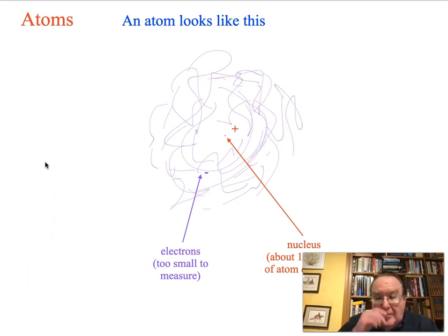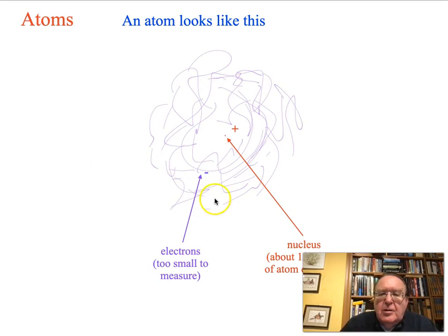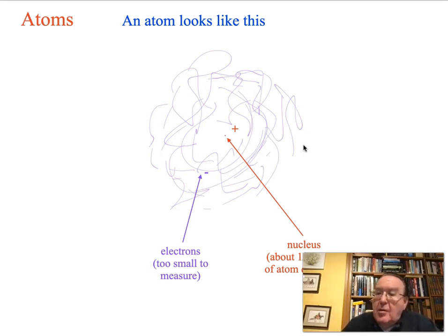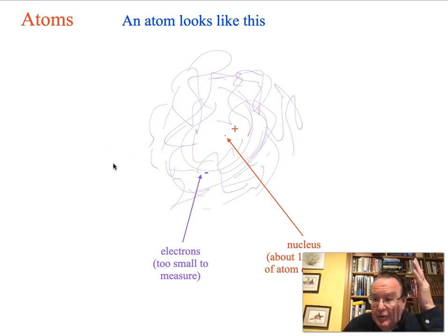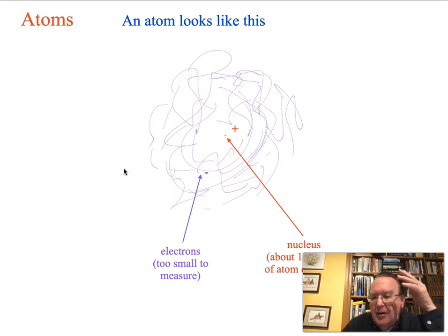We're going to be talking a lot about atoms. There are lots of images of atoms around, but most of them are actually not very physical. An atom really looks like this picture. There's a nucleus at the center, which is smaller than a pinprick on the scale of this figure — about 100,000 times smaller than the diameter of an atom. Swirling around this nucleus, which is positively charged because it's filled with protons, are electrons. The electrons themselves are too small to measure, and they swirl around almost randomly — though in fact they follow a pattern that's not completely random. So that's what an atom looks like physically.